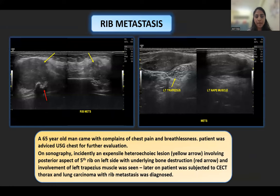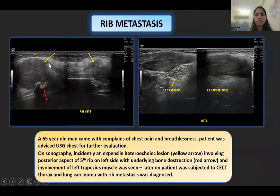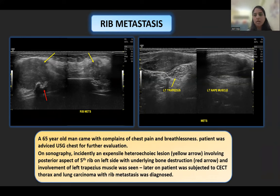In this case, a 65-year-old man presented with chest pain and breathlessness and was advised sonographic chest evaluation. On sonography, there is an incidentally found expansile heteroechoic lesion indicated by the yellow arrow involving the posterior aspect of the 5th rib on the left side, with underlying bone destruction indicated by the red arrow, and involvement of the left trapezius muscles. The patient was subsequently subjected to CT thorax and lung carcinoma with bone metastasis was diagnosed — a case of rib metastasis showing heteroechoic areas with increased surrounding vascularity.